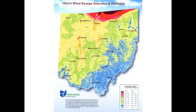This map shows Ohio's wind energy potential based on wind speeds 100 meters above ground level. The green, yellow, and orange colors are places that would be okay, if not great, for wind power. But note the wind speeds over Lake Erie at the top of the map — that's why there is interest in the potential for offshore wind in the Great Lakes, which could increase wind energy from the 1.7 percent of Ohio's electricity that it currently generates.